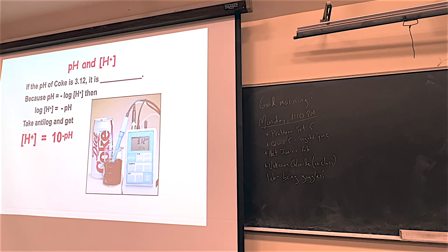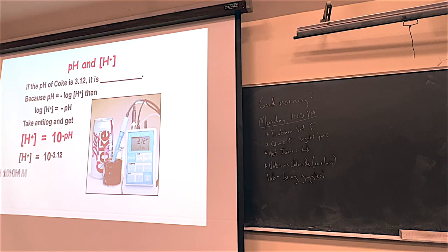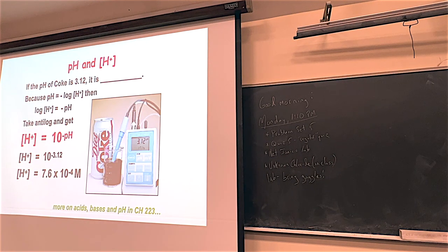Even if you don't have a LOG button, you can still go 10 with the carat symbol - raised to the power of. Make sure you put the minus sign in: minus 3.12. If you do this calculation, you get 7.6 × 10⁻⁴.